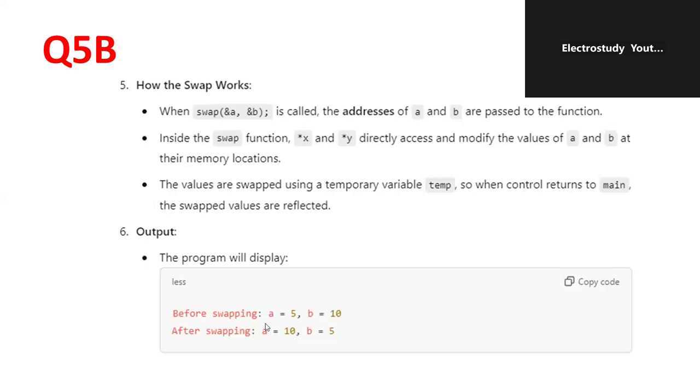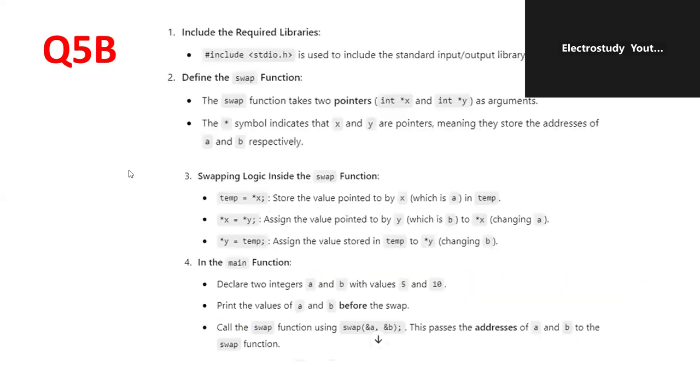In this particular thing, before swapping, a is equal to 5, b is equal to 10. After the swapping, a is equal to 10, b is equal to 5. That's all. That could be the expected outcome.